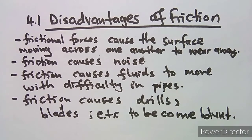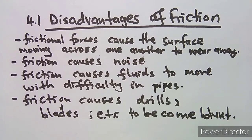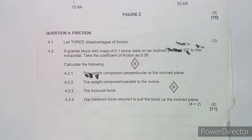Those are some disadvantages of friction. Third, friction causes fluids to move with difficulty in pipes. Fourth, friction causes drills, blades, and scissors to become blunt — going from a sharper surface to a blunt surface. Those are the disadvantages of friction.